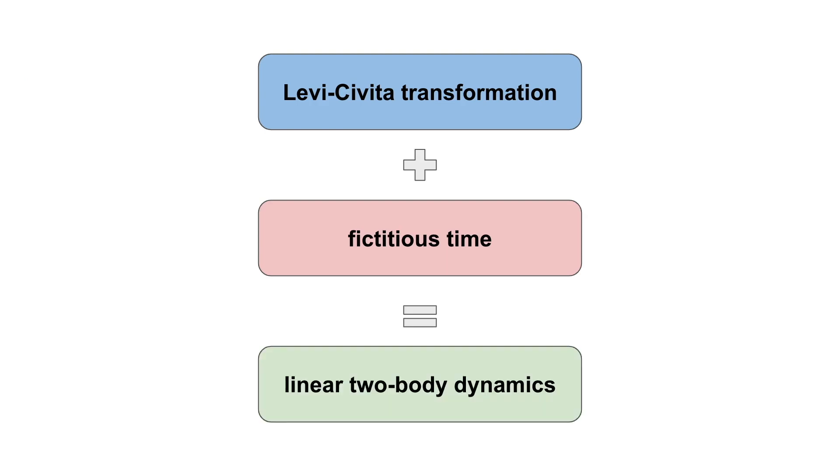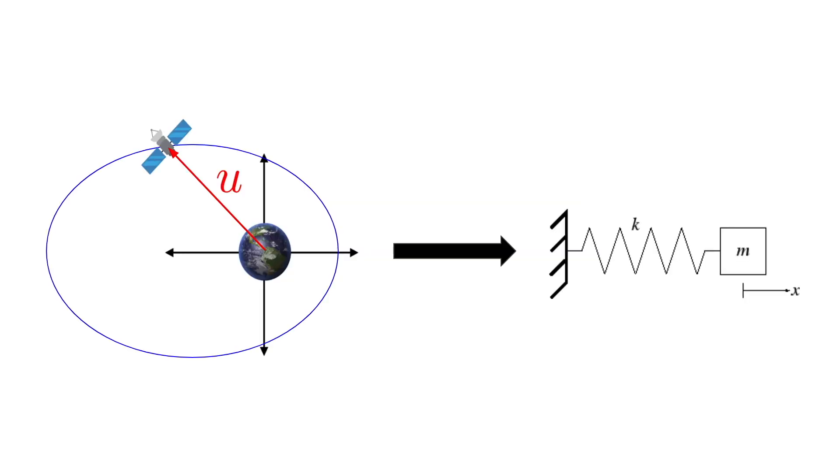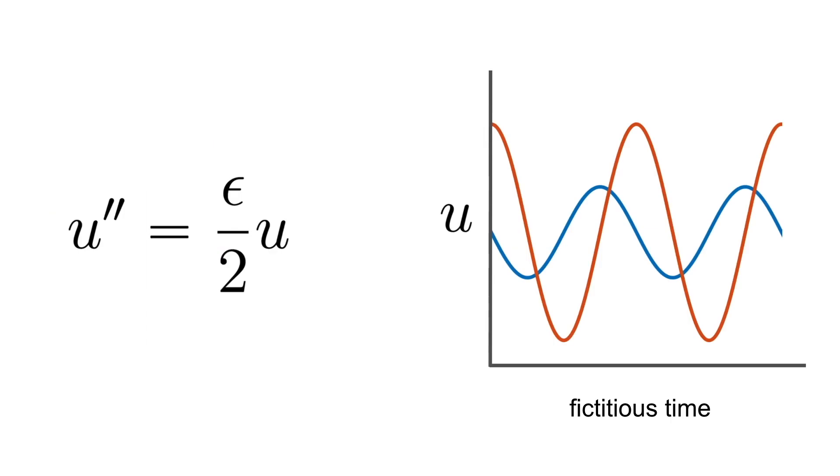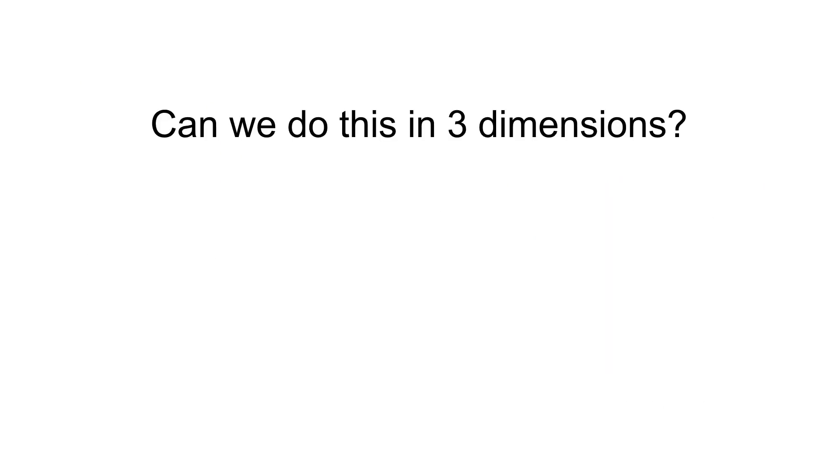When the imaginary number used to describe the spacecraft's location in the orbit is combined with this fictitious time, the result is linear two-body dynamics. More specifically, these dynamics become a linear simple harmonic oscillator with no damping. The solution to this is a set of sinusoids, with the behavior being dictated by nothing more than the constant specific orbital energy of the spacecraft.